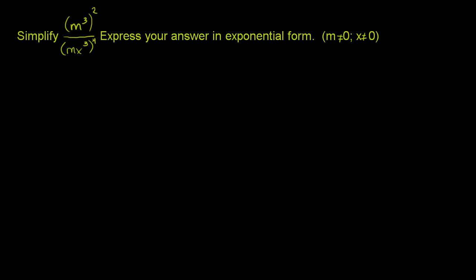So let's try to simplify this. Let me rewrite it. So the numerator is m to the third squared, and our denominator is mx to the third to the fourth power. Now let's just work on each of these independently. What is m to the third and then that to the second power?